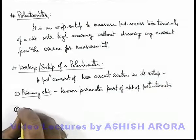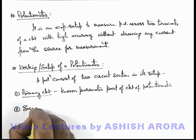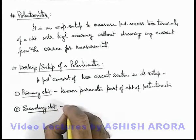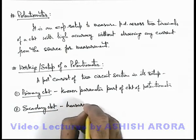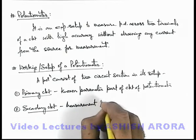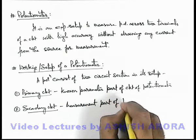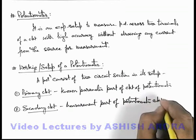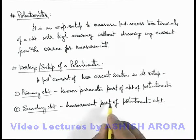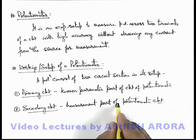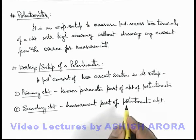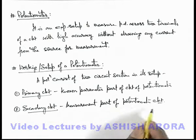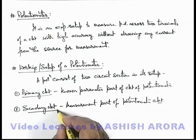The second one we can write is secondary circuit. This is basically called measurement part of potentiometer circuit. In this section we connect those terminals of circuit or different kind of potential difference which are to be measured, and this part of potentiometer circuit is called secondary circuit.